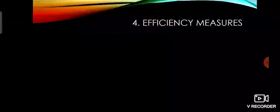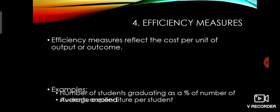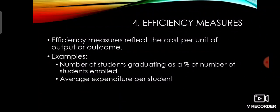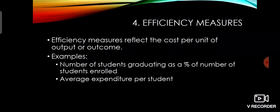Efficiency measures reflect the cost per unit of output or outcome. An example would be the number of students graduating as a percentage of the number of students enrolled. This tells us whether our plan is efficient — for instance, if 50 students enrolled, are 50 also graduating? This helps us evaluate whether our processes are efficient enough.